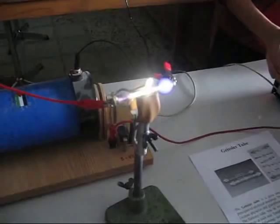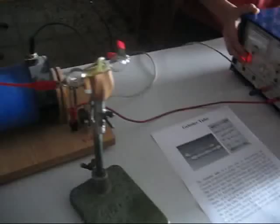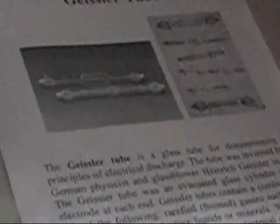The Geissler tube is a glass tube for demonstrating the principles of electrical discharge. The tube was invented by the German physicist and glassblower Heinrich Geissler in 1857.